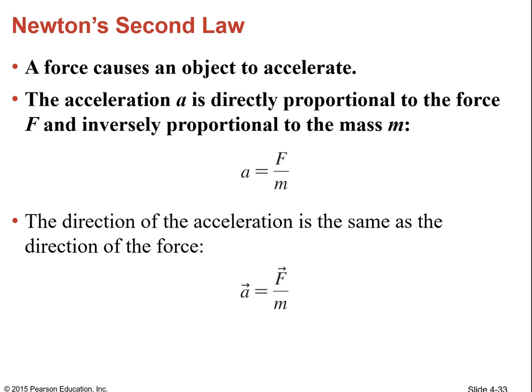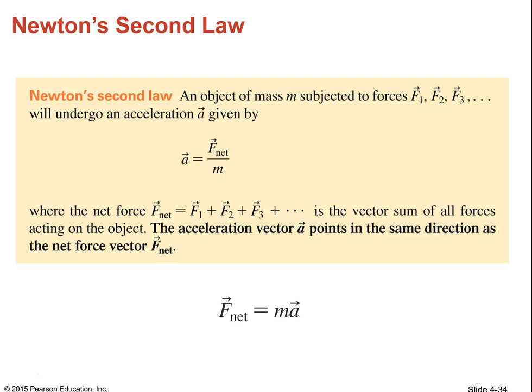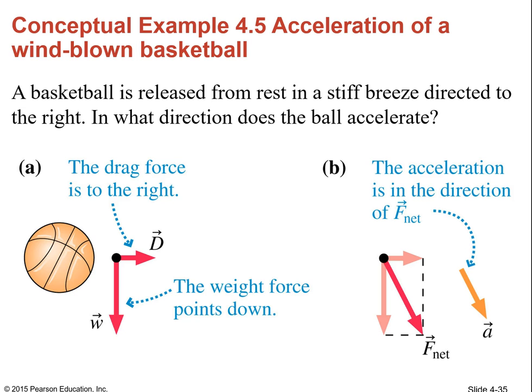That all leads into Newton's second law of motion. Newton's second law states that force causes an object to accelerate — the acceleration is directly proportional to the force and inversely proportional to the mass. The formula: acceleration equals force divided by mass. Importantly, the acceleration is in the same direction as the force. Rearranged: F_net equals mass times acceleration. That's a very important equation.